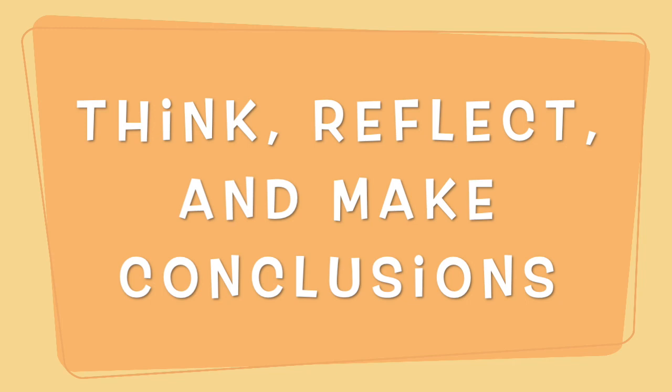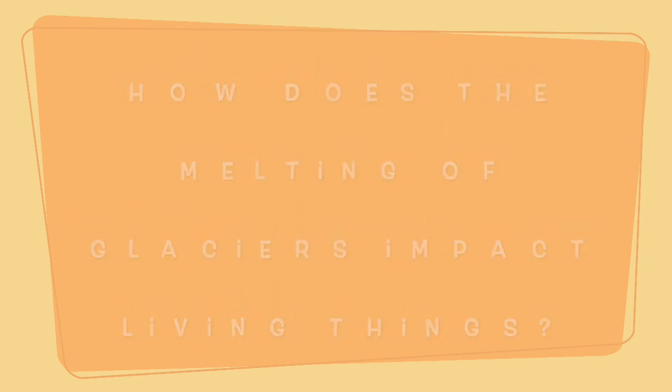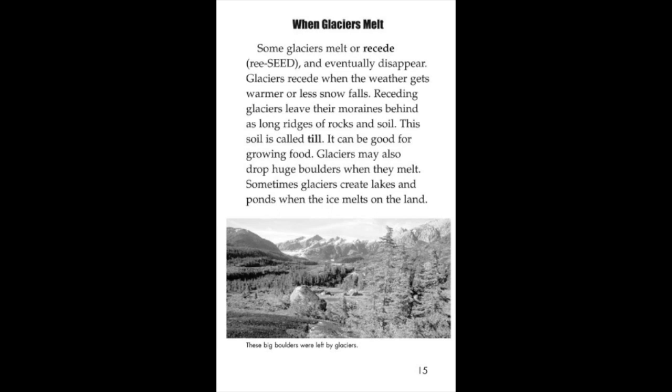But what happens when glaciers melt? How does that impact the living things that are depending on them? Let's read the last chapter and think about that question. How does the melting of the glaciers impact living things that live in that area? When glaciers melt. Some glaciers melt or recede and eventually disappear. Glaciers recede when the weather gets warmer or less snow falls. Receding glaciers leave their moraines behind as long ridges of rocks and soils. This soil is called till. It can be good for growing food.